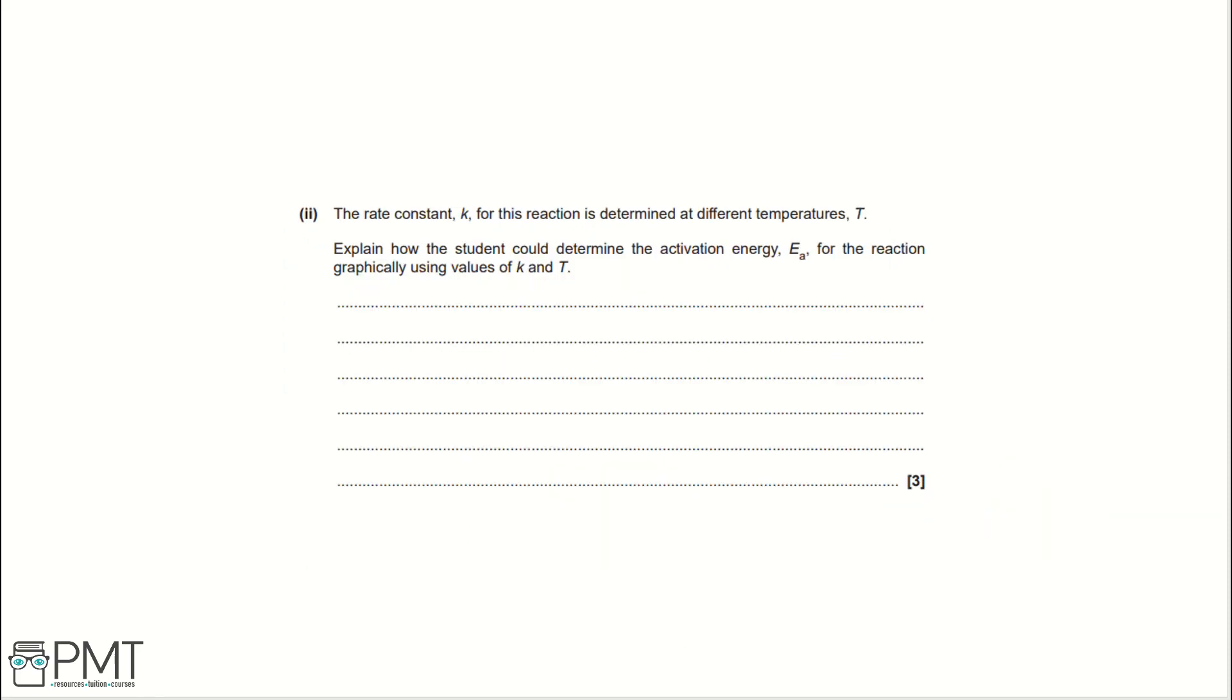Part 2. The rate constant K for this reaction is determined at different temperatures T. Explain how the student could determine the activation energy for the reaction graphically using values of K and T. In our data sheets, we get given an equation that links all of these pieces of information together. That equation is lnK equals EA over minus RT plus lnA.